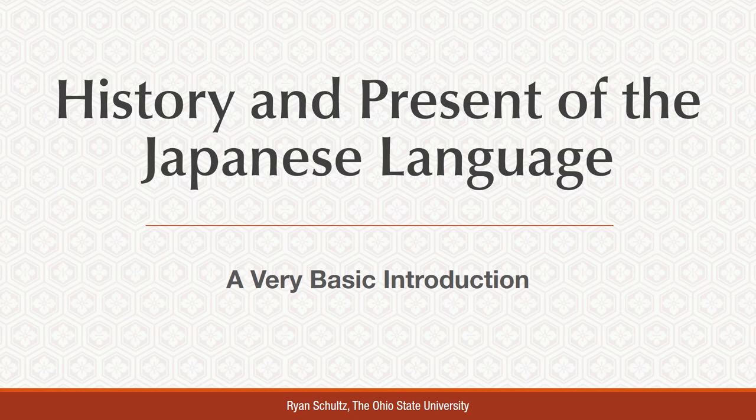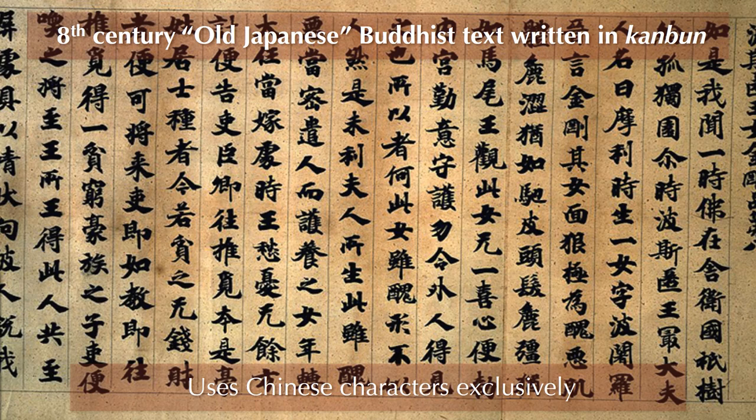Our quest begins in the archives. The earliest written records of the Japanese language date back to the late 5th century AD, but it's not until the 8th century that we can begin to access a broad literary tradition in written Japanese. What these older tales, poems, and documents reveal to us right away is that Japanese has not been exactly the same language across its history. This should be no surprise, of course — all human languages have changed considerably over time.